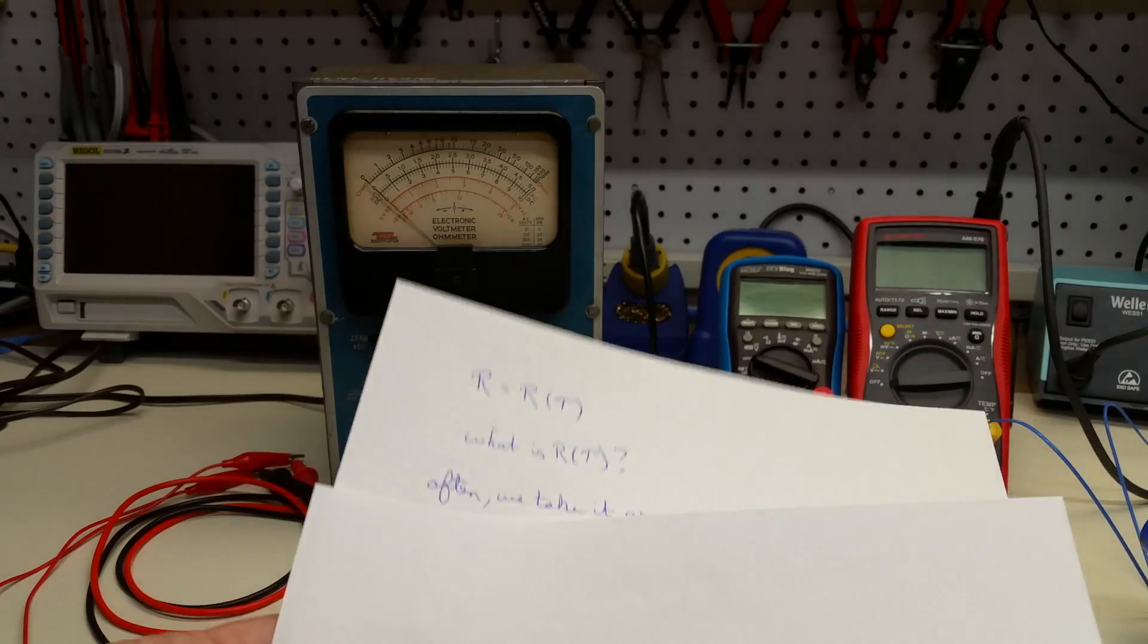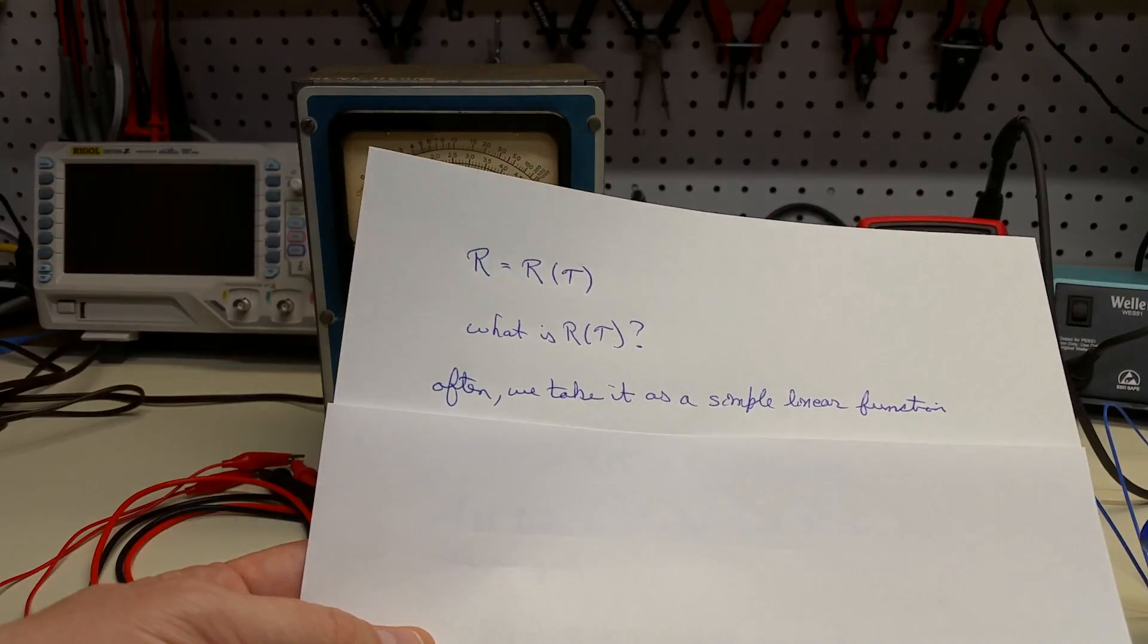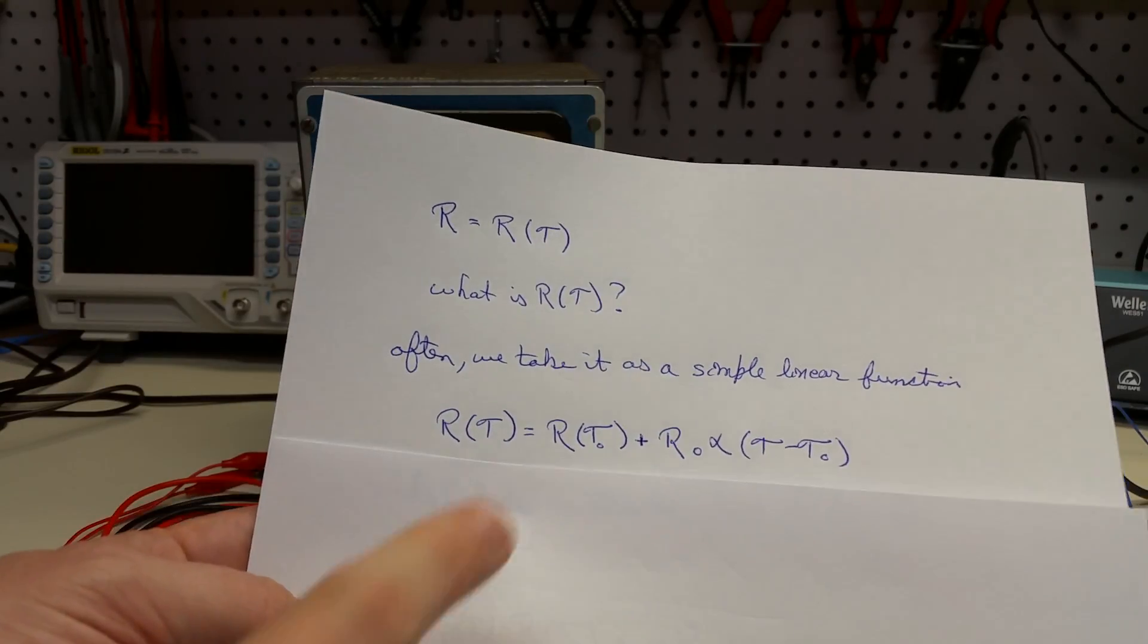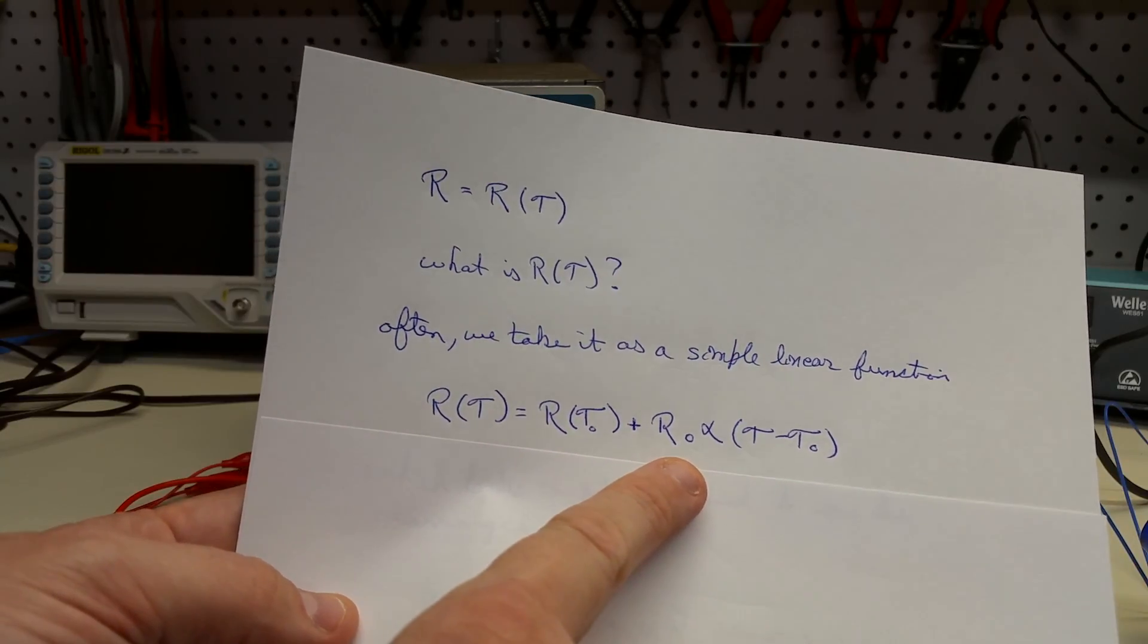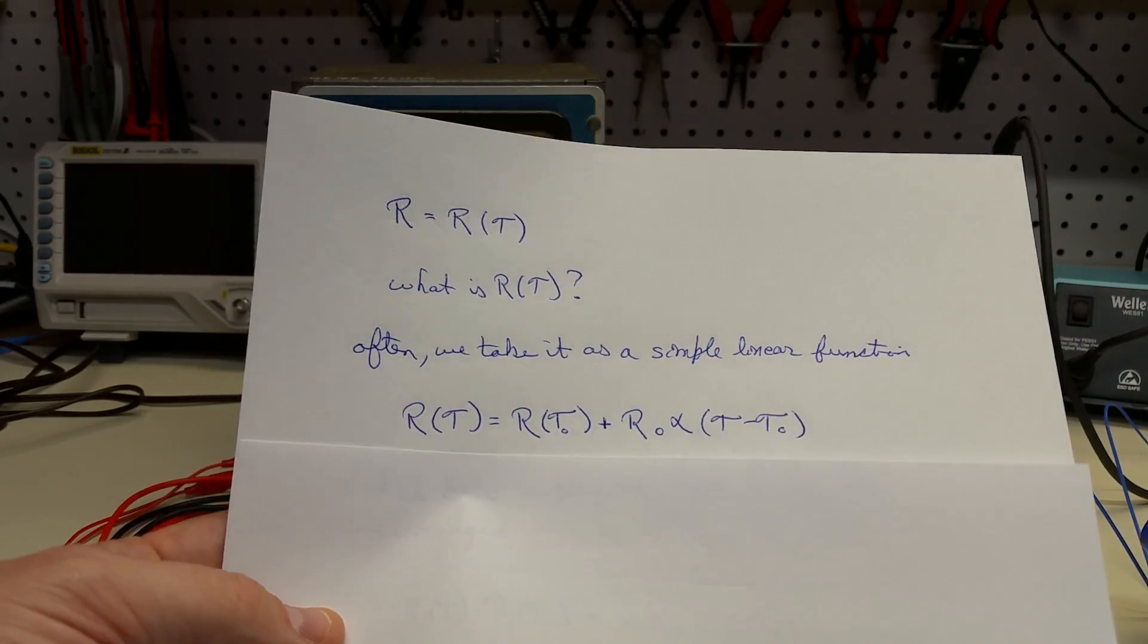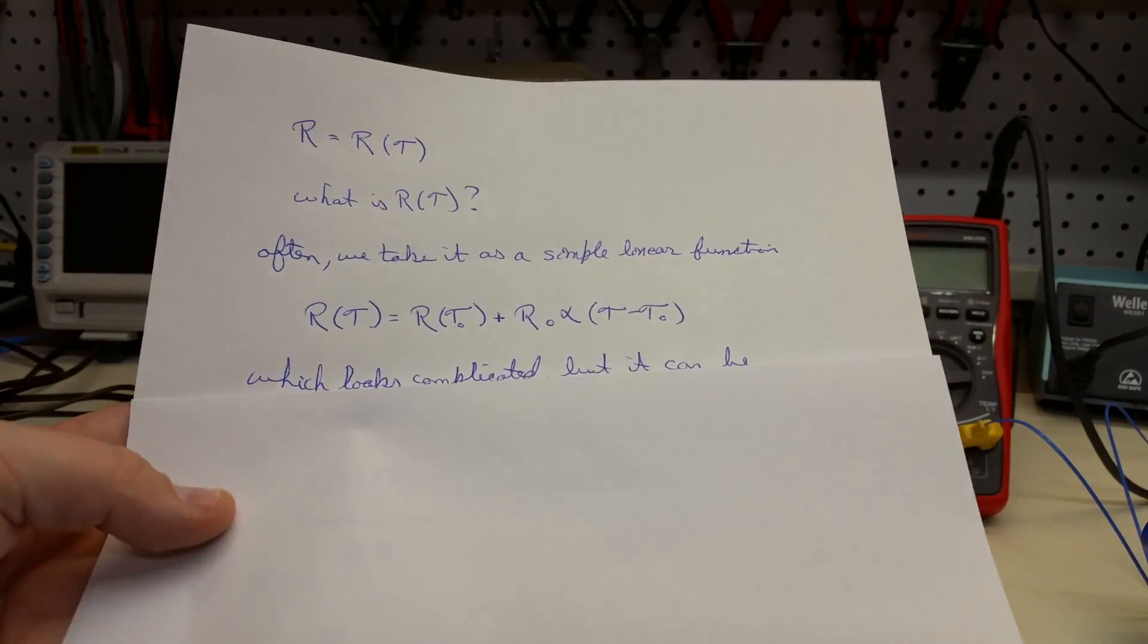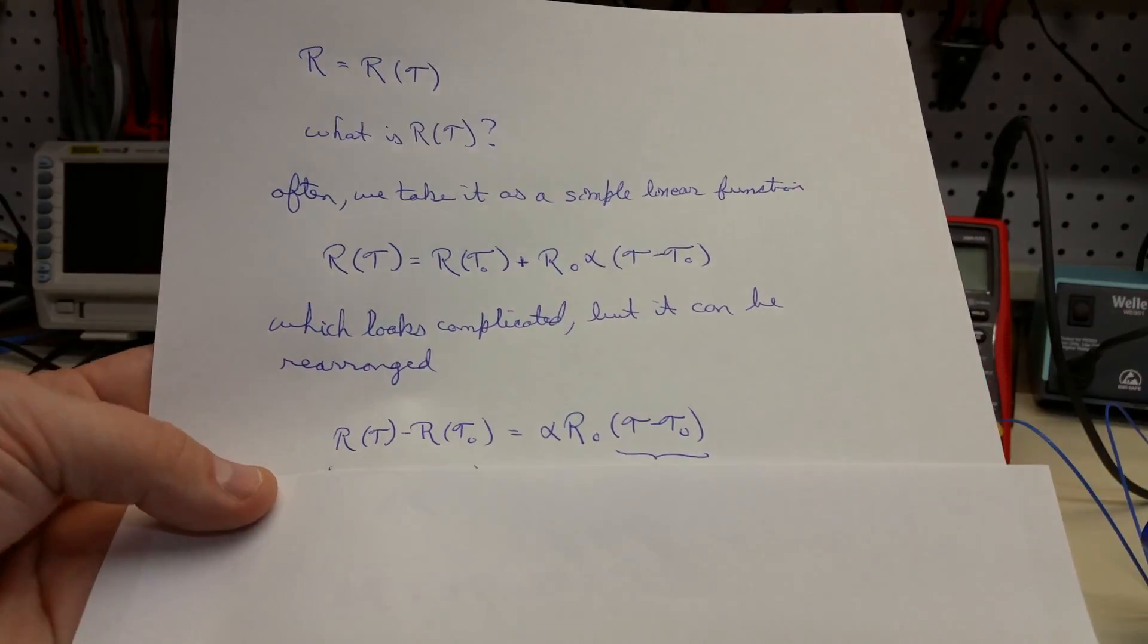And so we might imagine that it's, in general, more complicated. But oftentimes we just take it as a simple linear function. And so we can write it like this, where R of T, or R as a function of temperature, is whatever the resistance is at an initial temperature, plus the change in temperature times some constant alpha. That alpha is what we call the temperature coefficient of resistance, or TCR. That looks more complicated than a simple straight line, but we can rearrange that.